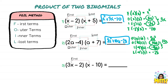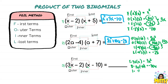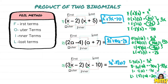For the last FOIL example: first terms, 3x times x is 3x squared. Outer terms: 3x times negative 10 is negative 30x. Inner terms: negative 2 times x is negative 2x. Last terms: negative 2 times negative 10 is 20. We combine negative 30x and negative 2x to get negative 32x. Therefore our final answer is 3x squared minus 32x plus 20.